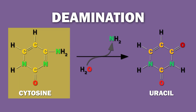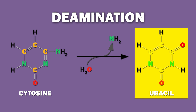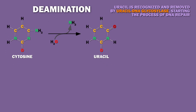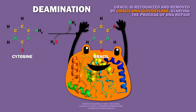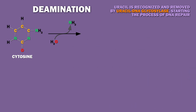Spontaneous deamination of an unmethylated cytosine turns it into a uracil. Uracil isn't one of the four bases making up DNA, but is purely a product of deamination. It is recognized and removed by uracil DNA glycosylase, starting the process of DNA repair.